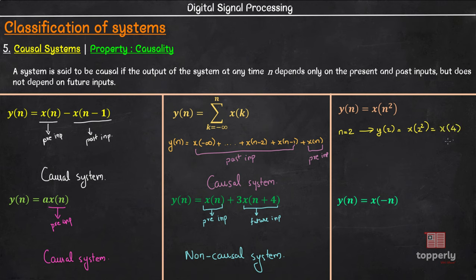The output at the instance n equal to 2 is dependent on a future input at the instance n equal to 4. That means this is also a non-causal system.